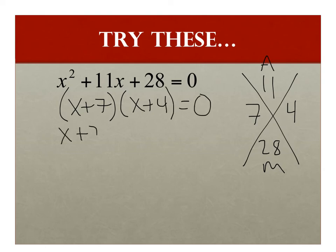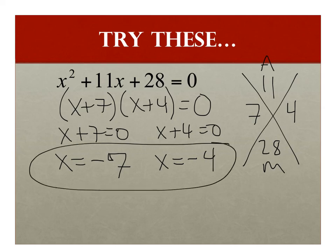x plus 4 equals 0. So I get x plus 7 equals 0, x plus 4 equals 0. I get x equals negative 7 and then x equals negative 4. Boom. My two answers. Dunzo.